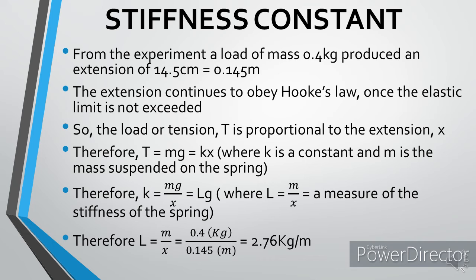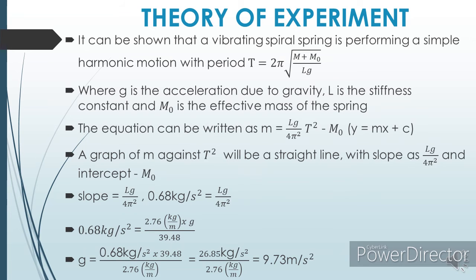Right. So knowing that a vibrating spiral spring is performing a simple harmonic motion with a period T that is equal to 2π√[(M + M₀)/(Lg)], this is the equation that we will use to get the period for a spiral spring. Now where M₀ is the effective mass of the spring, g is the acceleration due to gravity, L as earlier calculated is the stiffness constant, and m is the mass that is being hung on the spiral spring.